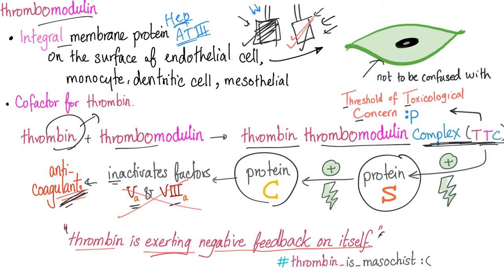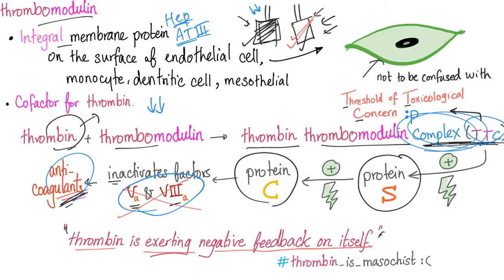How did thrombomodulin release the accelerator? Because now you have less thrombin — you took all of the thrombin that was pro-coagulation and converted it into something anti-coagulation. Now you have less acceleration and more brakes at the same time, because the amount of thrombin available in the plasma is low — all of the thrombin is now in the complex, and this complex is anti-coagulation. You are stopping coagulation by inactivating factors 5 and 8, and also decreasing the amount of pro-coagulation thrombin. You are applying the brakes while releasing the accelerator at the same time.